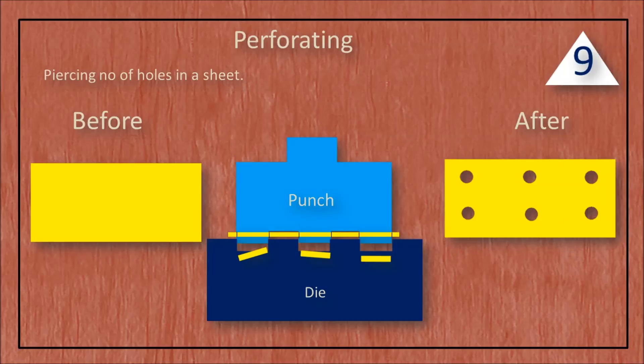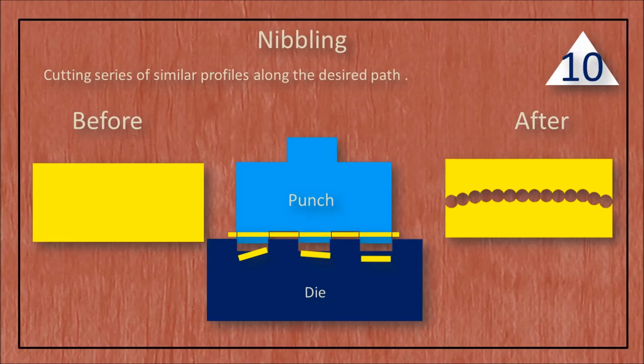Perforating is piercing a number of holes in a sheet. Nibbling is the process of cutting a series of similar profiles along the desired path.